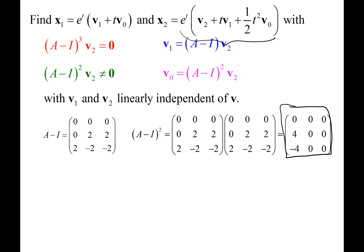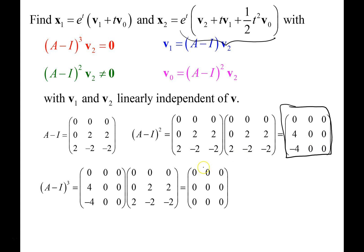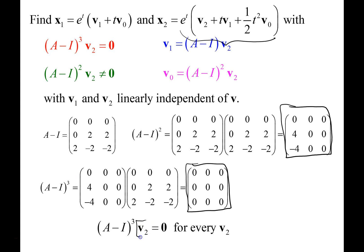So (A − I)³ equals 0, which means it's automatically satisfied for all v2. But (A − λI)² is not zero. So we get to pick our v2 freely, as long as it satisfies the conditions.